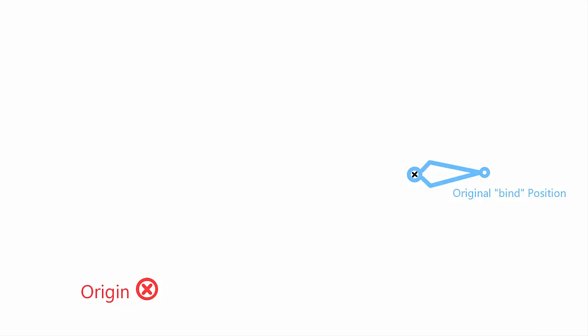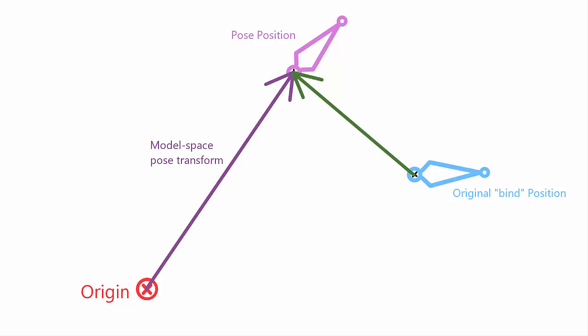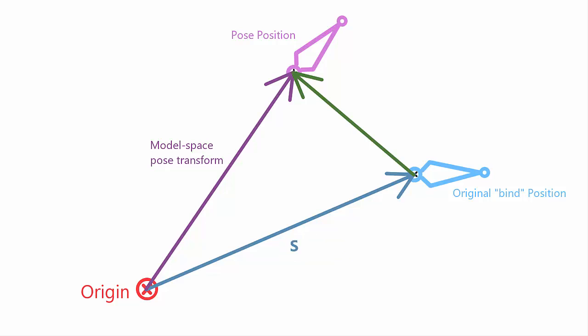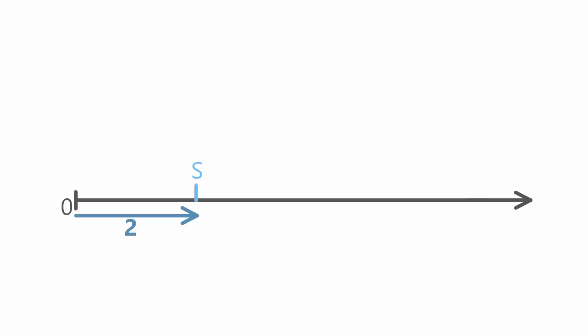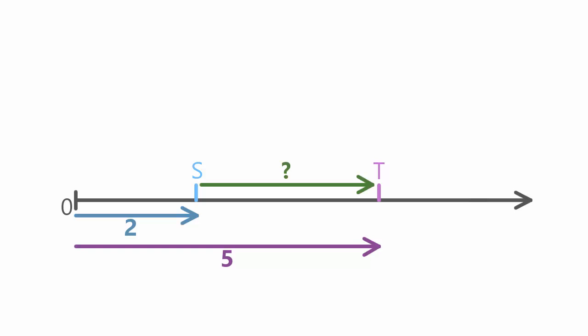Then comes the final calculation to calculate the joint transform, which took me quite a while to get my head around. Let's say that this is the joint's original position in the model when no animation is applied, and this here is the position of the joint in the current pose — so the transform we're trying to calculate is this one here. We already have the model space transform of the joint in the pose position because we just calculated it, and let's say that we also have the model space transform of the joint in its original bind position. So we have the transform of the original position, we have the transform for the target position, and we need to calculate the transform needed to go from the start position to the target position.